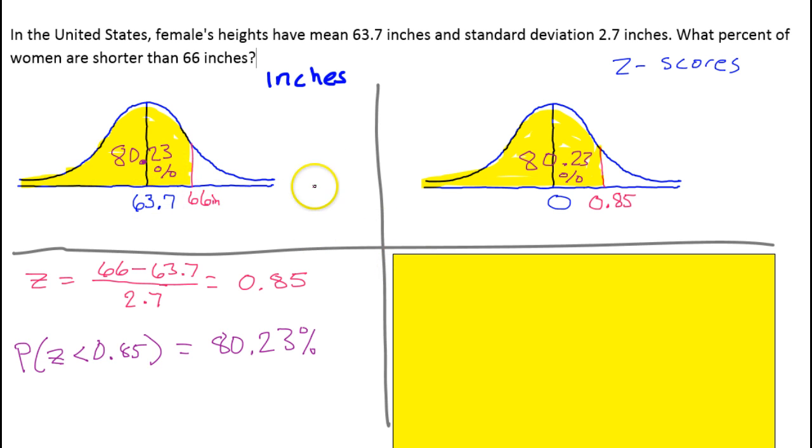That means we're ready to answer the question. We'll write our answer in a complete sentence right here. 80.23% of women have heights less than, or are shorter than, 66 inches. And that's it.